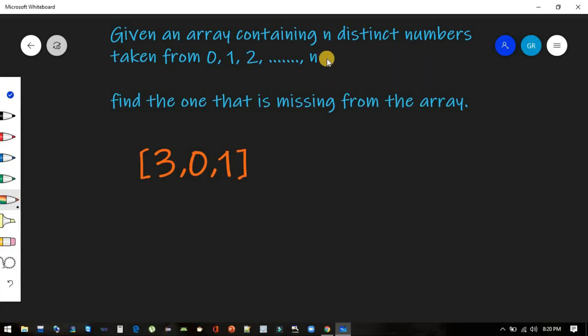Let's see the example first. Here 3, 0, 1 are given, so from this we can conclude that n is 3, and n distinct from 0 to 3, so 0, 1, 2, and 3, that should be the actual numbers.